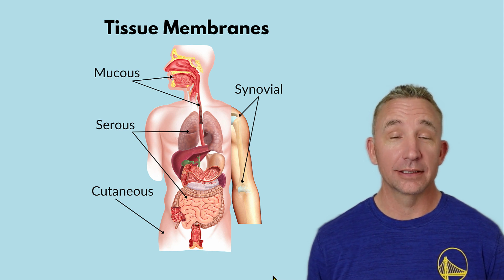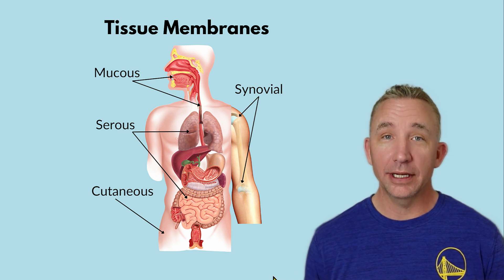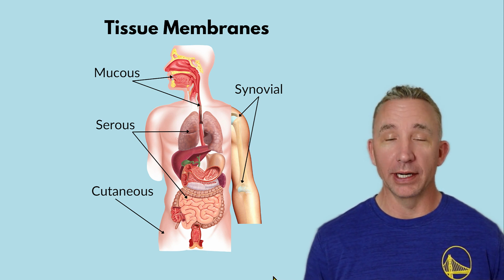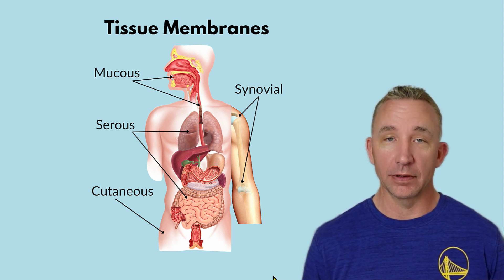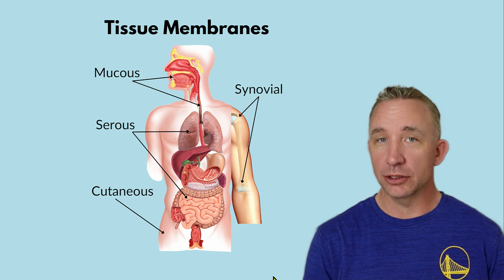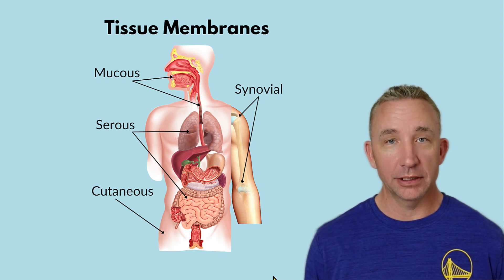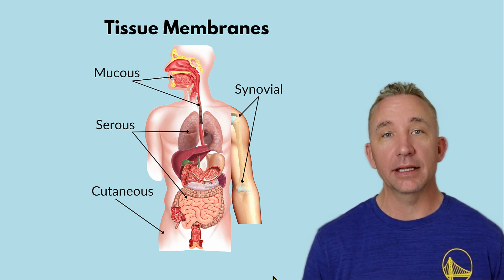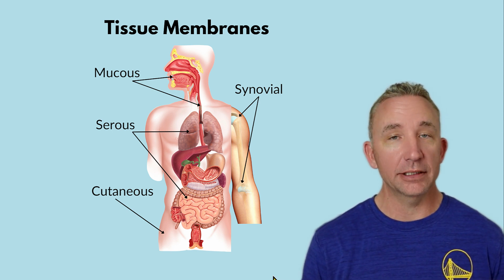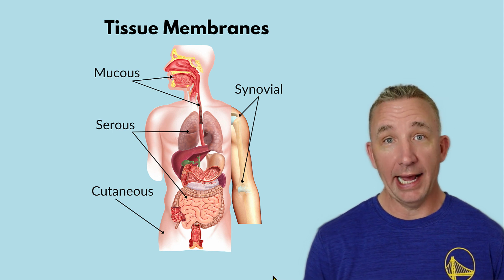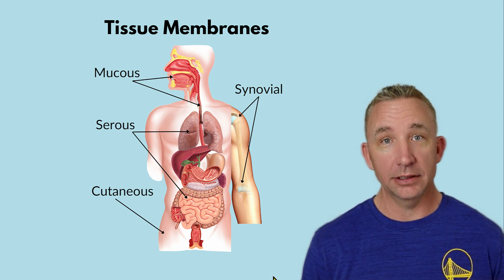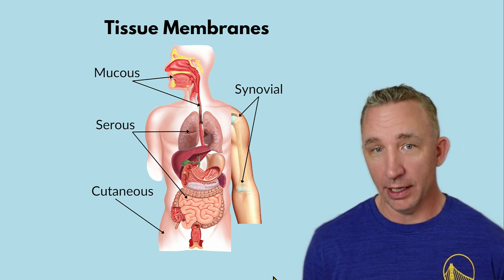Tissue membranes. We're learning about membranes and there are four different types that we'll cover. Basically, they're just sheets of cells that are typically thin, and they provide a protective covering. Some are more active than others to protect the body.